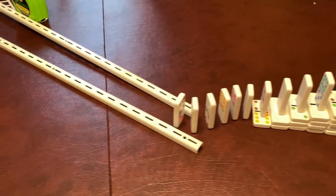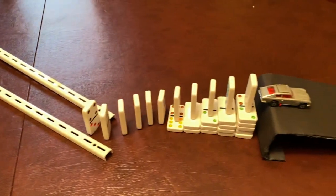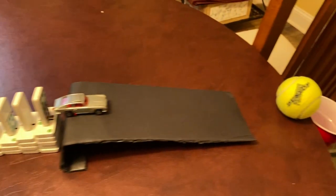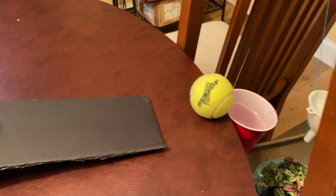As the next line of dominoes topples, they travel up a flight of domino steps. Then, the final domino will hit a toy car, which will travel down the inclined plane and collide with a tennis ball.